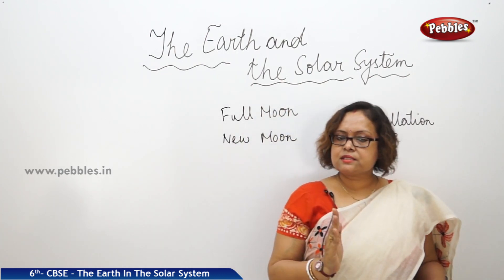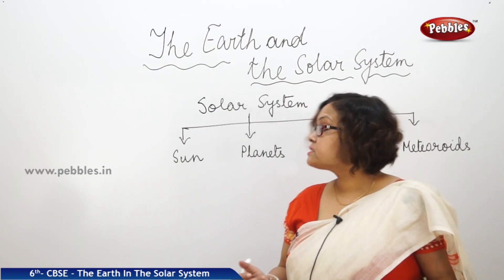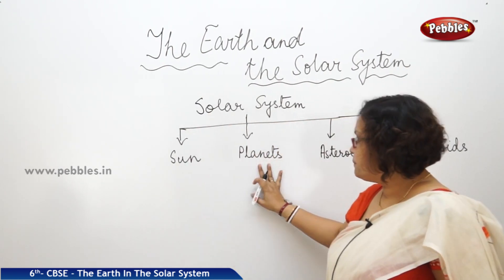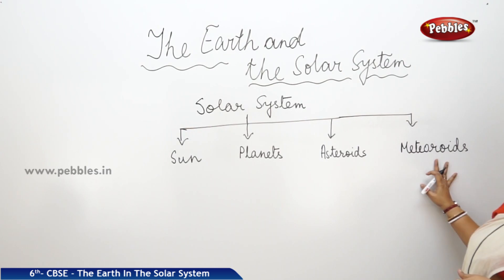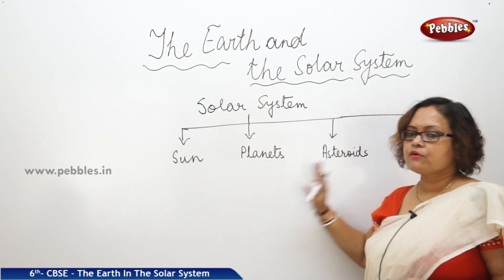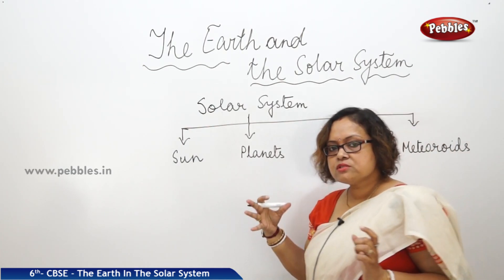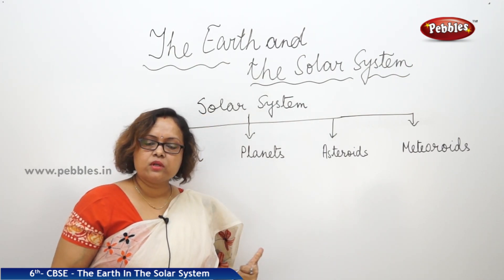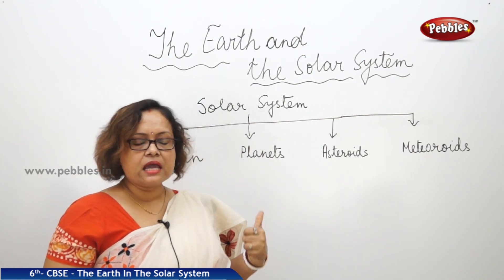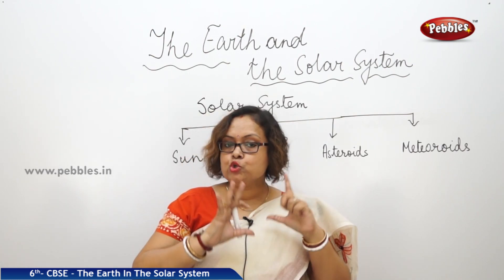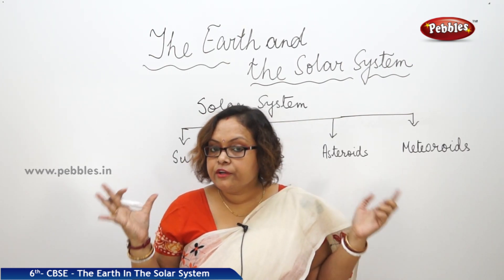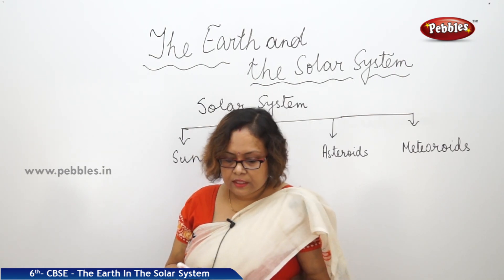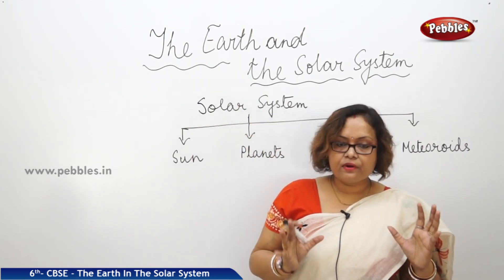Now we will discuss about the solar system. Our solar system consists of one sun, eight planets, many asteroids and meteoroids. Sun is the source of all heat and energy for Earth. It is the only star in the solar system that is providing heat and light to the entire solar system. It is a huge ball of helium gas that is continuously producing lots of heat as well as light — a burning ball, we can say. It is extremely hot and it provides a pulling force.